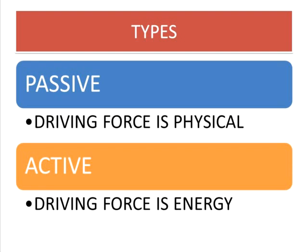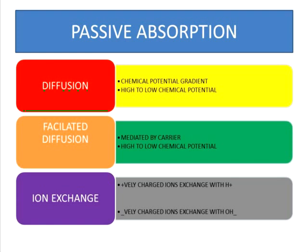Regarding the mechanism of passive absorption: absorption of ions and molecules propelled by physical force is called passive absorption. The various modes are categorized as follows. First, diffusion — the movement of ions and molecules from a region of higher to lower chemical potential, along the concentration gradient, involving no energy.